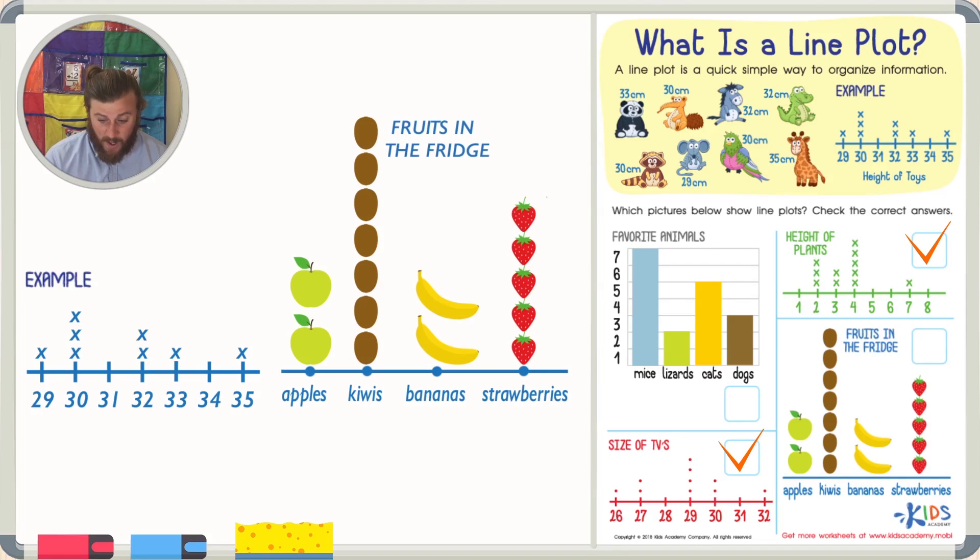Our final picture is really awesome also, but it is not a line plot. This is a picture graph. I know that because there are pictures. I can see the pictures of the apples, of the kiwis and the bananas and the strawberries. Another reason I know it's not a line plot is because there's no numbers on the bottom. We have the names of the fruits.